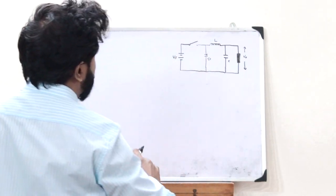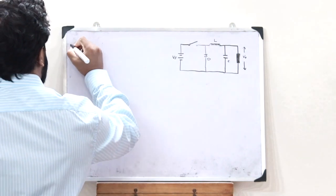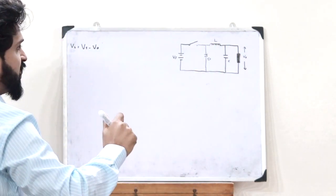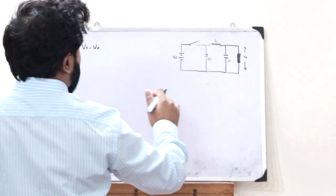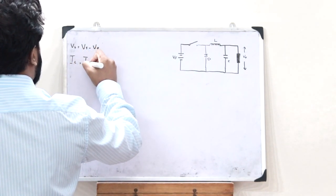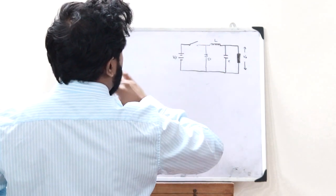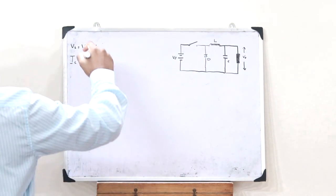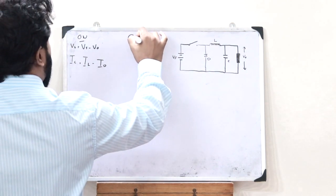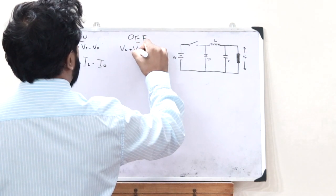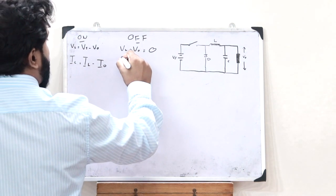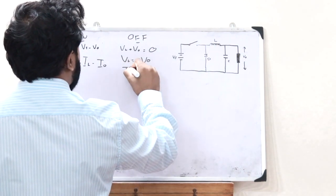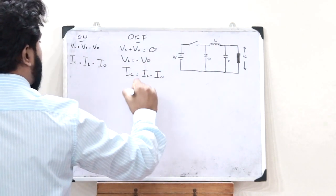When the switch is in the ON position, the voltage across the inductor is VL = Vs − V0, and the capacitor current is IC = IL − I0. When the switch is in the OFF position, the inductor voltage plus the output voltage must equal zero, giving VL = −V0, and the capacitor current remains IC = IL − I0.